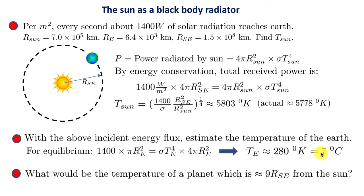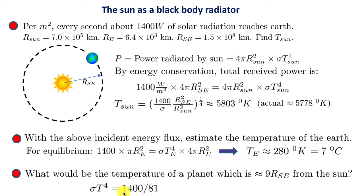Using the same principle, we can estimate the temperature of a planet 9 times further from the sun than the earth. Since radiation intensity falls as the square of distance, the received power is reduced by a factor of 81. Because T ∝ (power)^(1/4), the temperature of that planet is only 1/3 that of Earth — 3 times smaller.